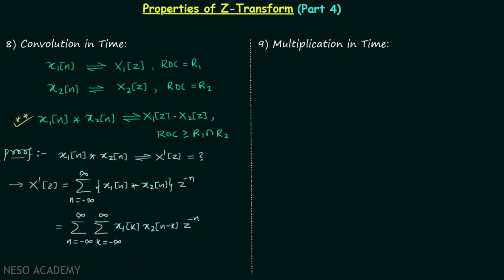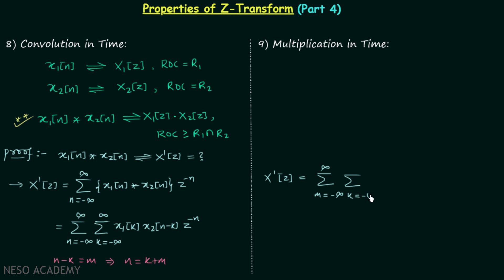Now we will assume that n minus k is equal to m. This implies n is equal to k plus m. So we will make these substitutions, and X(z) becomes a summation where in place of n we write m, going from minus infinity to infinity, and the inner summation from k equals minus infinity to infinity contains x1(k) multiplied by x2(m).